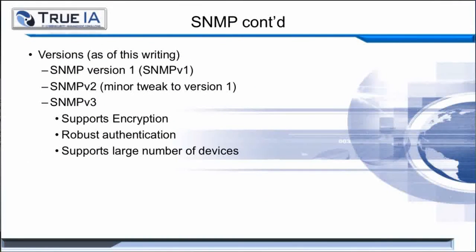There are multiple versions of SNMP. SNMP version 1 really isn't used much anymore because of its lack of inherent security. Next would be SNMP version 2, which is better than version 1; however, several weaknesses have been identified. The modern standard is SNMP version 3, which fully supports encryption as well as robust authentication and supports large numbers of network devices.